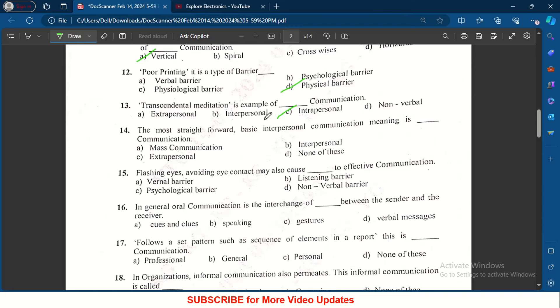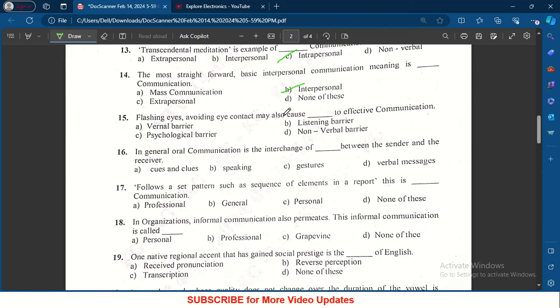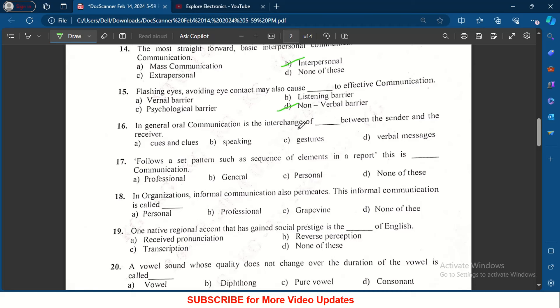The most straightforward basic interpersonal communication meaning is dash communication. Here interpersonal is the answer given, so let me choose that. Flashing eyes, avoiding eye contact may also cause dash to effective communication - it causes nonverbal barrier to effective communication.